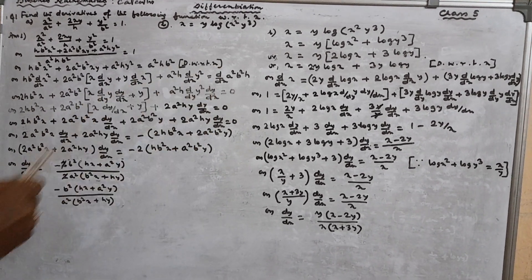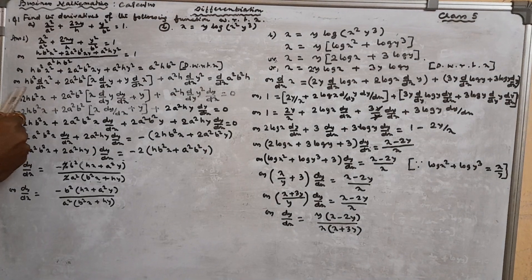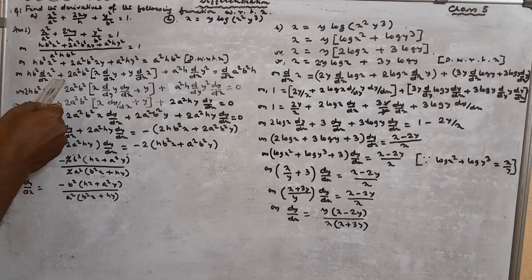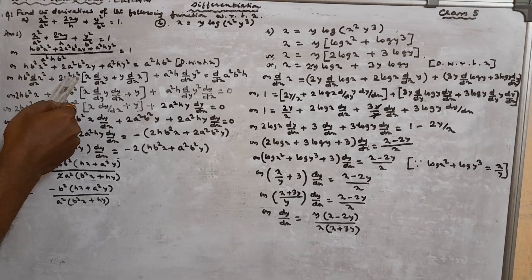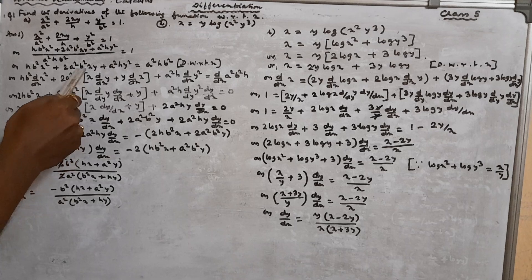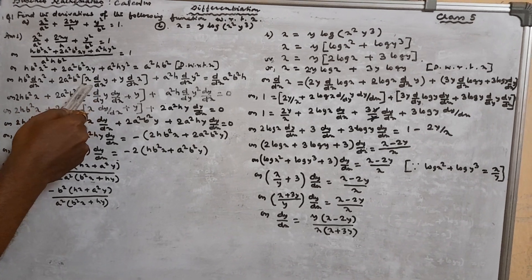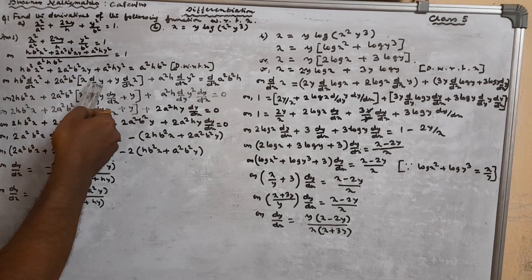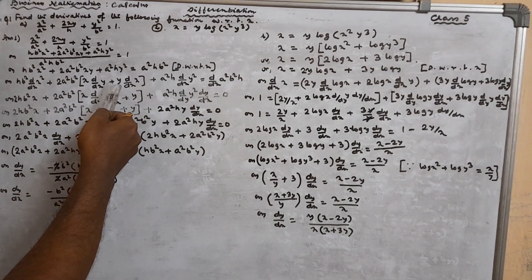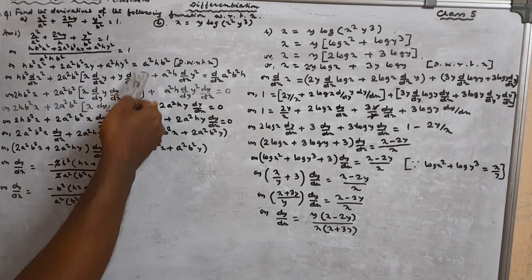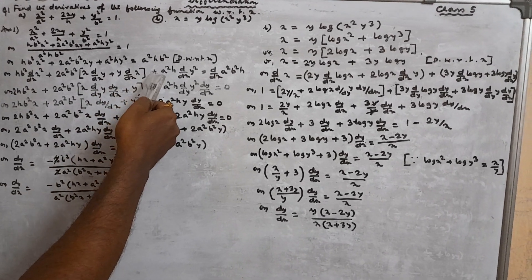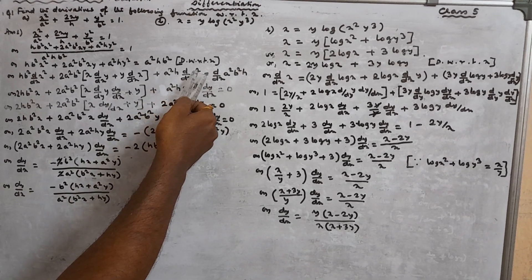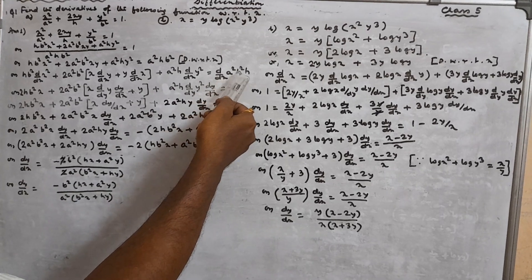Now differentiating both sides with respect to X: HB² is a constant taken outside, so d/dx of X²; plus 2A²B² is a constant taken outside, and XY is in the form of a product — first function is X, second function is Y. Then plus A²H · d/dx of Y² equals d/dx of A²B²H.